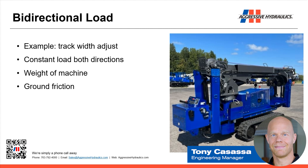Here we have an example of a bi-directional load. On this machine, the tracks can be extended out for a wide lifting base or retracted in for transport or getting into tight spaces. There are cylinders mounted horizontally that adjust the track width, and this is a constant load in both directions — it doesn't matter if the tracks are being widened or narrowed, whether the cylinder is extending or retracting. The load may vary depending on surface — concrete versus gravel — or if the machine is heavier, but in general it's a constant load.